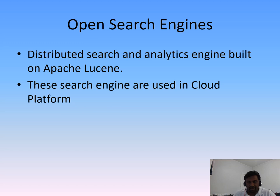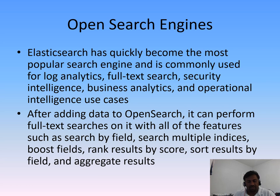Elasticsearch and OpenSearch are distributed search and analytics engines built on Apache Lucene. Both search engines are used on cloud platforms. Elasticsearch has been in this scene for a long time and quickly became the most popular search engine. It is commonly used for log analytics, full-text search, security intelligence, business analysis, and operational intelligence.